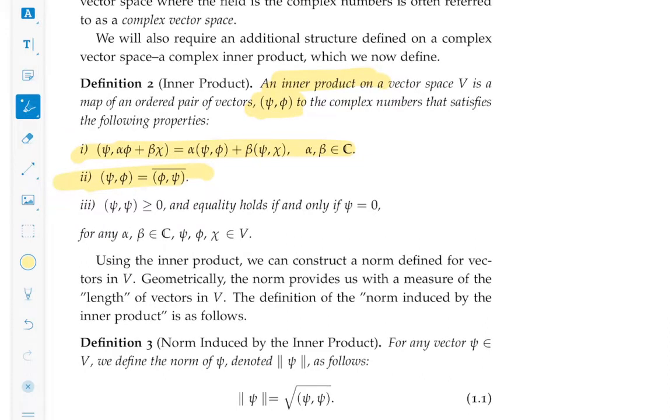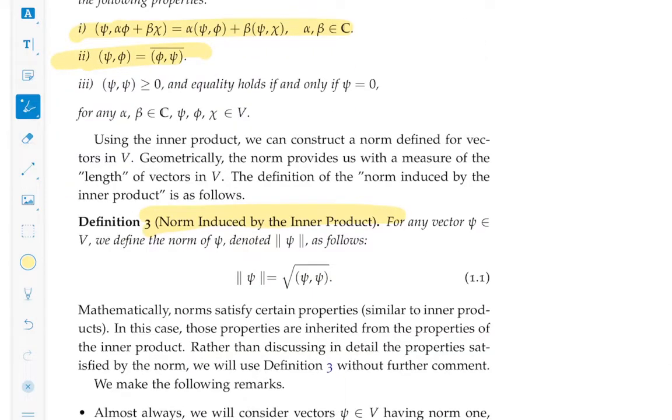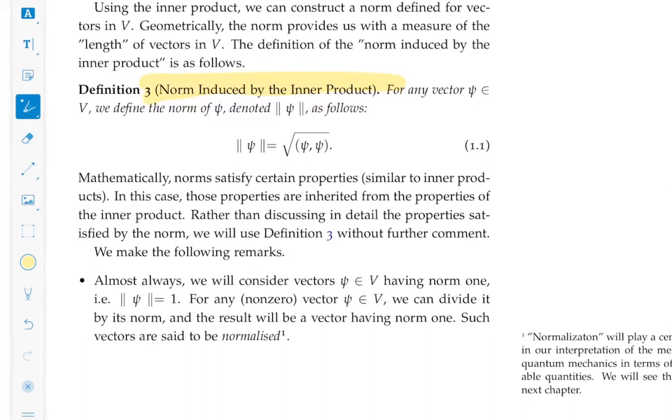While we're at it, the inner product can be used to create another structure which measures the length or the magnitude of a vector. And that's called the norm. The norm induced by the inner product, the norm of psi, we denote that with double vertical bars on either side, is the square root of the inner product of that vector with itself. Norms are going to be very important because we are going to be dealing with vectors which have unit length, unit norm. And we can always make them, provided that their norm is finite, we can always make them have unit length by dividing that vector by the real number, which is the norm of that vector. And that way, we say that the vector has been normalized. Normalization is extremely important.